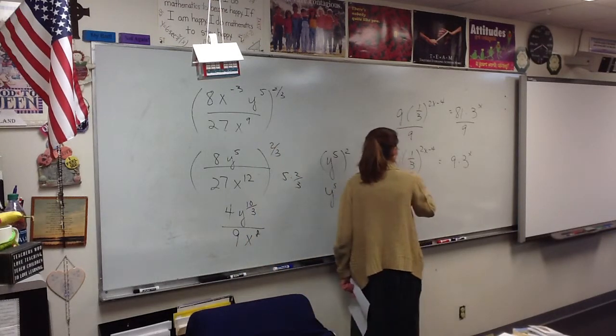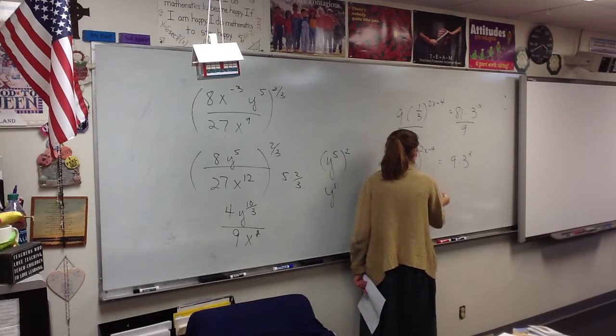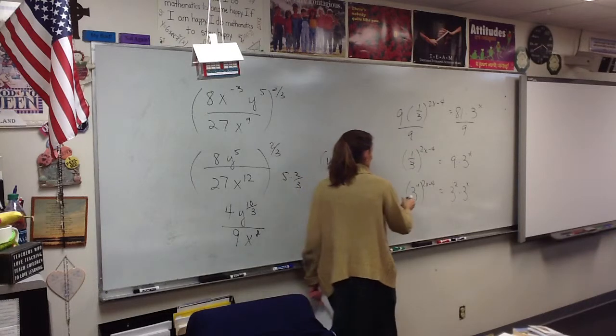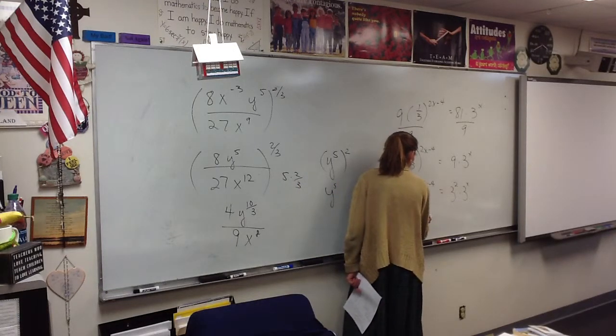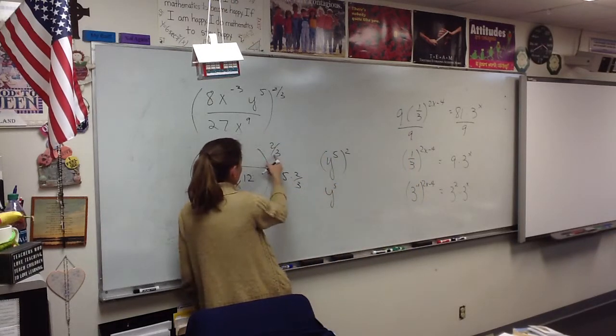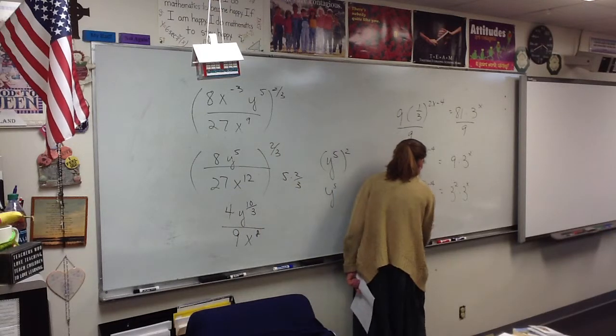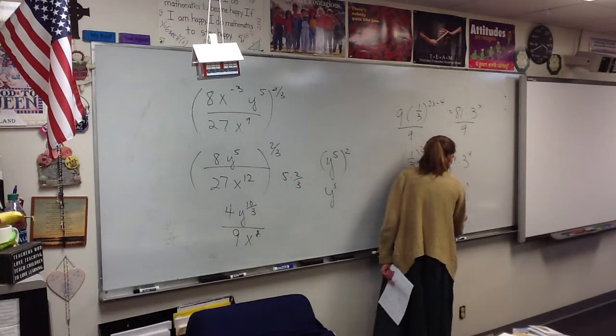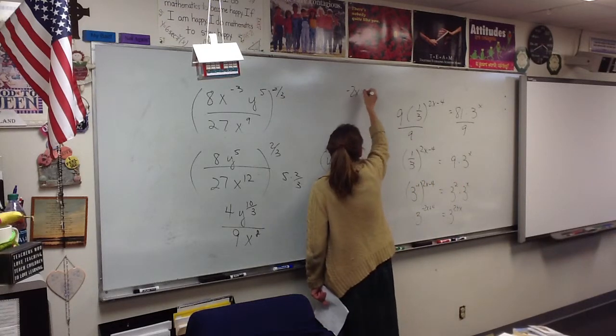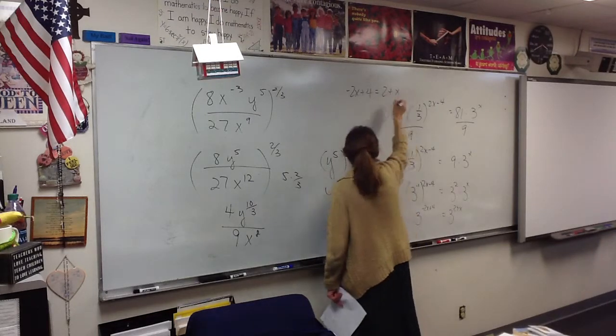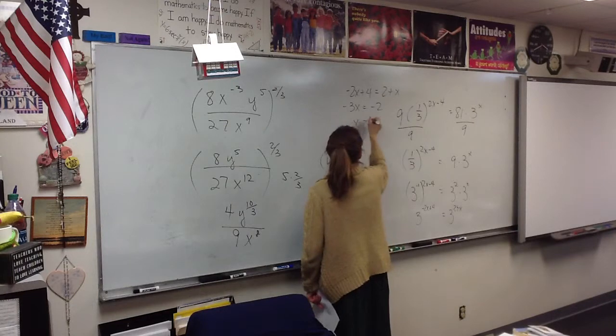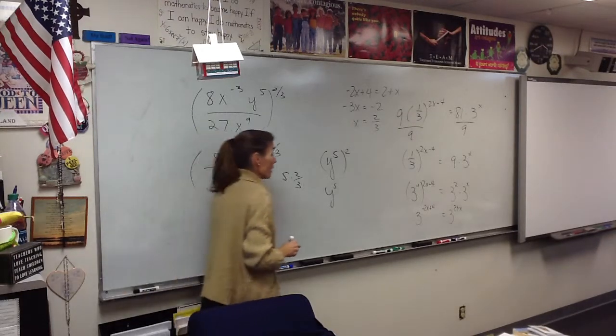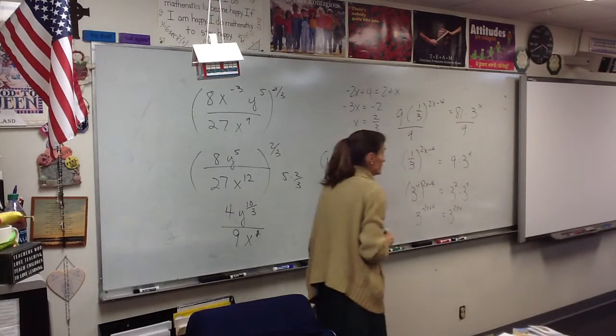Now, what power of 3 is 1 third? Negative 1st. What power of 3 is 9? 2. Now, you just told us what's going to happen with these exponents. Yeah, it's the same thing that happened here. What happened with these? So this is going to be 3 to the negative 2x plus 4. And what's going to happen to these? They're going to be added. So negative 2x plus 4 equals 2 plus x. So negative 3x equals negative 2. And x equals 2 thirds. You could not do that problem if these weren't all powers of the same number. But since they are.